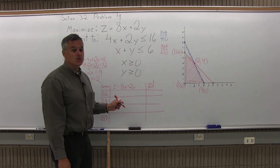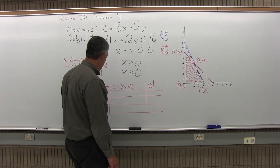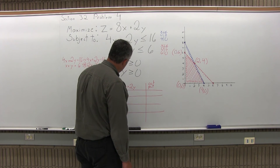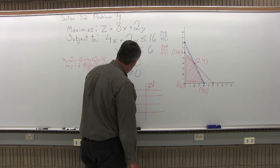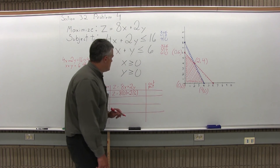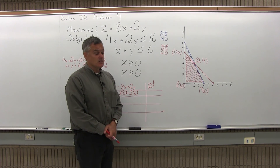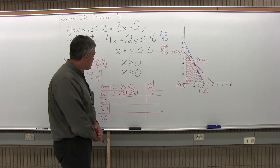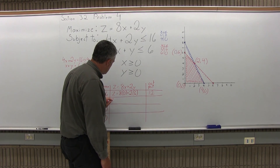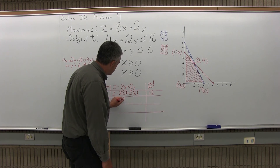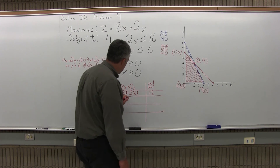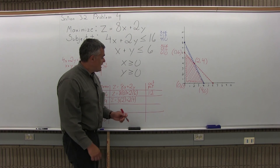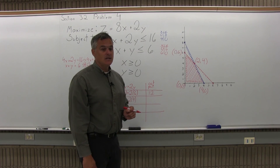Put the x and y values of each corner point into the objective function. For (0, 6): z equals 8 times 0 plus 2 times 6, which gives 0 plus 12, so the output is 12. For the next corner point (2, 4): z equals 8 times 2 plus 2 times 4, which gives 16 plus 8, so the output is 24.